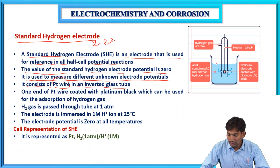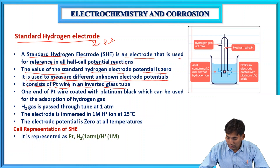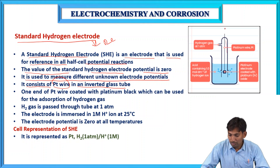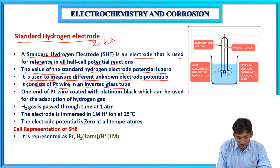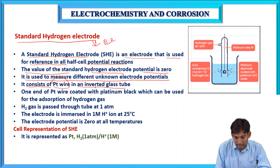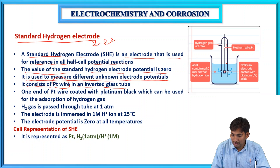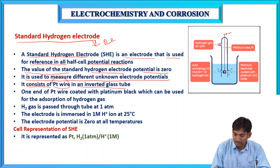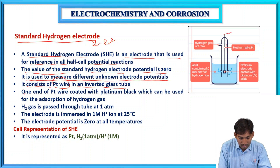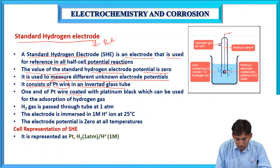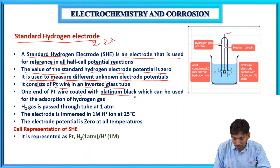See this diagram. This is an inverted U-shape in which a platinum wire is inserted. One end of the platinum wire is coated with platinum black — platinum black is nothing but platinum dioxide.